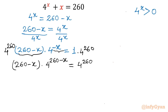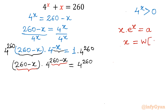Now if you look at the coefficient and its exponent, both are the same. If we consider x times e raised to the power x equals a, and take the Lambert W function on both sides, then the left-hand side becomes x only, equal to Lambert W of a. Because we know that Lambert W of (x times e to the power x) equals x.